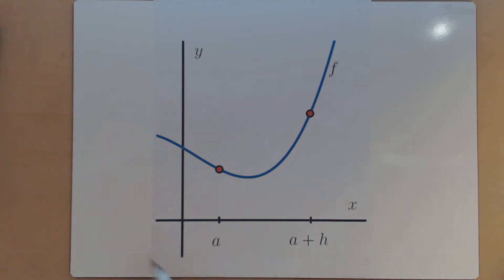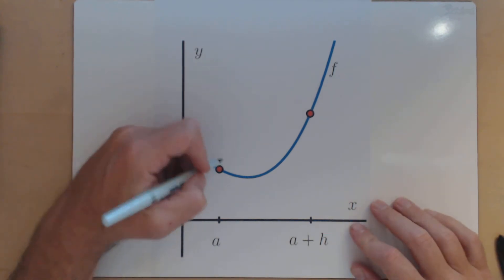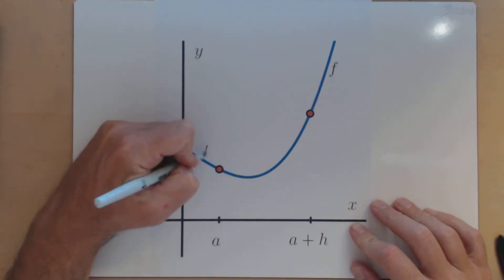First thing we're going to do is locate and label what these points are. Well, since this is an input of a, this is going to be the point a comma f of a.